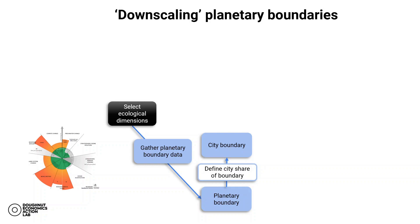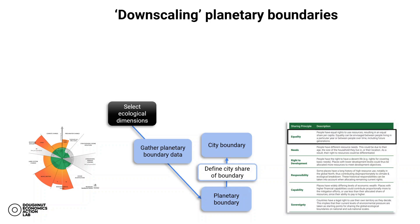Of course there's no right answer to this question. From a technical perspective it could range across a spectrum from perfect equality across all people and over all time to perfect inequality where one evil dictator gets everything today. But in practice there are a range of well-known sharing principles based on equality, sovereignty, responsibility, and so on. In Amsterdam they adopted an equal per capita approach based on consumption right now to define their city boundary. That sharing principle is arguably more just than other approaches, but it's still hugely beneficial to a global north city because it doesn't take into account historical responsibility for past emissions and resource use.